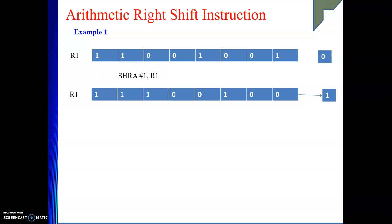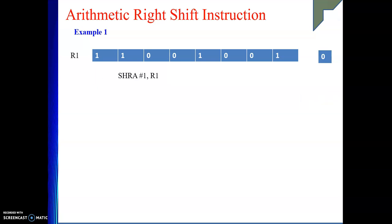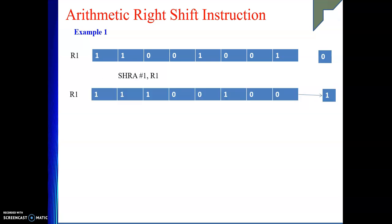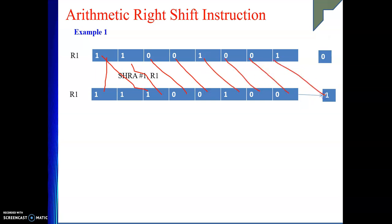After the shift, this bit comes here, and the remaining bits shift accordingly: 0, 0, 1, 0, 0 — and this last 1 goes out. This is how the operation is performed.